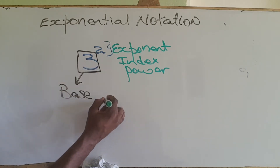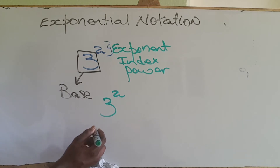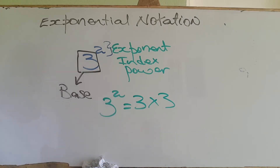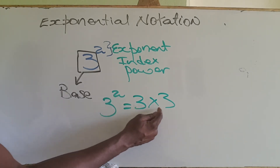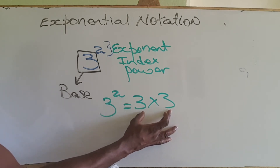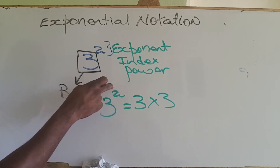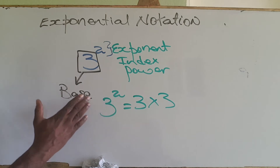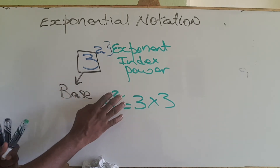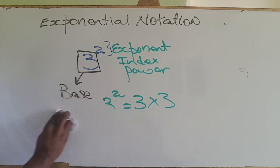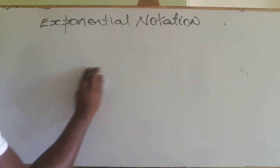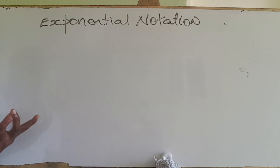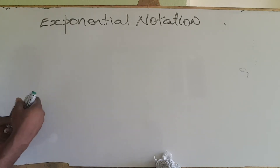This notation has a meaning. Three to the second power really means three multiplied by itself two times — so three times three is the same as three to the second power. In exponential notation, we're going to take some numbers and write them in this form: a number raised to a power. We're also going to focus on using prime numbers — the smallest prime number that is divisible into the larger number.